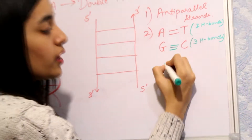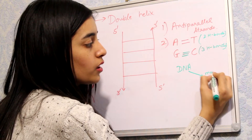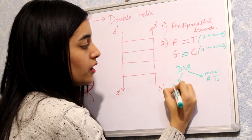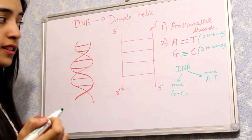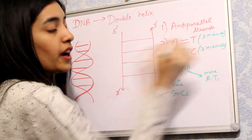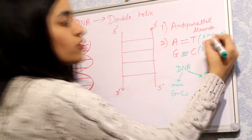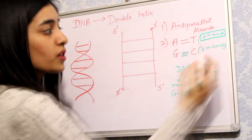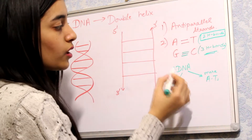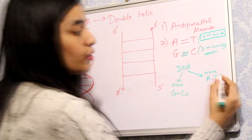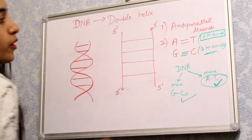Here is a question: if a DNA sample has more A-T pairs and another has more G-C pairs, which DNA will melt more easily? For melting of DNA we need to break the hydrogen bonds. Two hydrogen bonds will be easier to break than three hydrogen bonds, so the DNA with more A-T pairs will melt more easily because it has fewer hydrogen bonds.